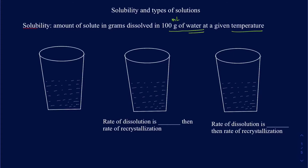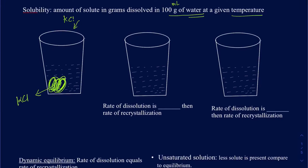Here's how this process works. Suppose I take some KCl (potassium chloride) and add it into a beaker. This solid KCl is going to start dissolving. Initially, when KCl is broken into ions — K⁺ and Cl⁻ — the rate of dissolution is going to be higher than the rate of recrystallization. Once your solution becomes saturated, you can have K⁺ and Cl⁻ combining back to make solid KCl.